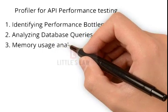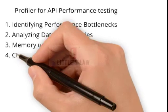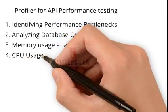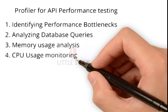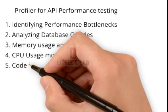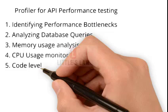Next comes memory usage analysis. Profilers can track the memory usage of an API during its execution. Excessive memory usage can lead to performance issues such as slowdowns or crashes. By analyzing memory consumption patterns, profilers can identify memory leaks or inefficient memory usage within the API code, allowing developers to optimize memory management. Next is CPU usage monitoring — profilers provide insights into the CPU usage of an API during execution. High CPU usage indicates areas of code consuming significant computational resources, and by identifying CPU-intensive functions, profilers help developers optimize those parts to reduce CPU utilization and improve overall performance.